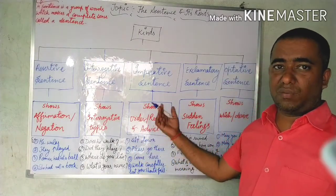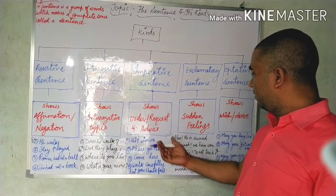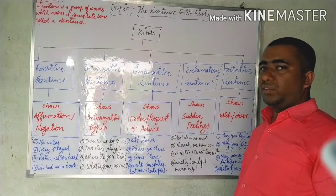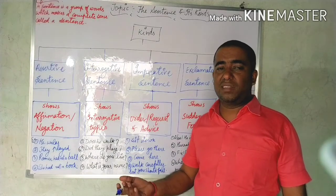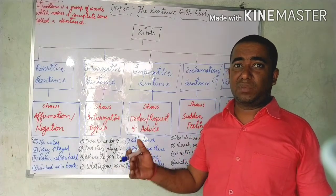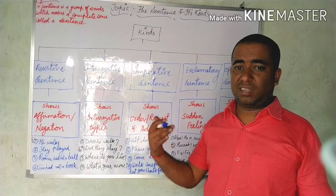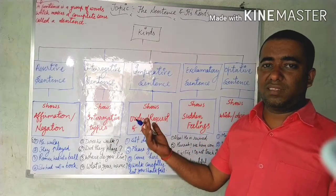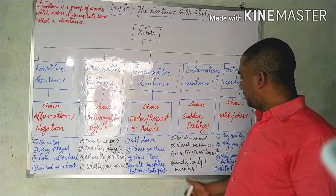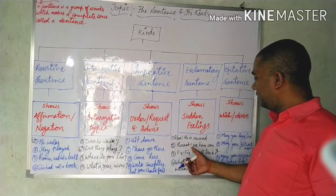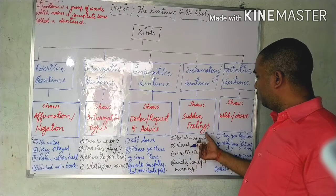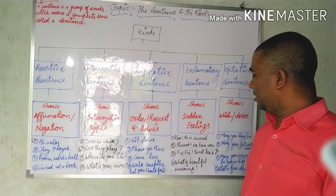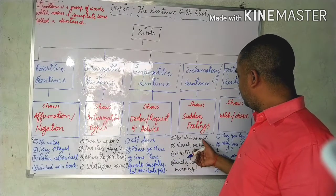'Work carefully lest you should fall' is an example of advice because someone is giving advice to another person. The fourth kind is exclamatory sentences. Exclamatory sentences show sudden feelings — when something happens suddenly, we give a quick response using these types of sentences. For example, 'Alas! He is ruined.' 'Alas' is the symbol of sadness.